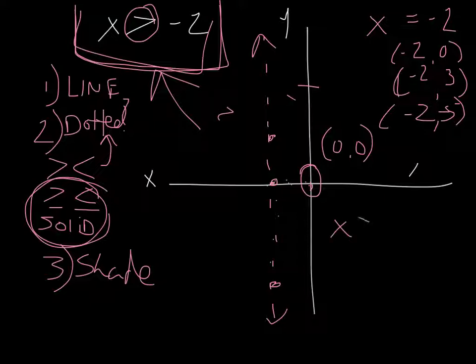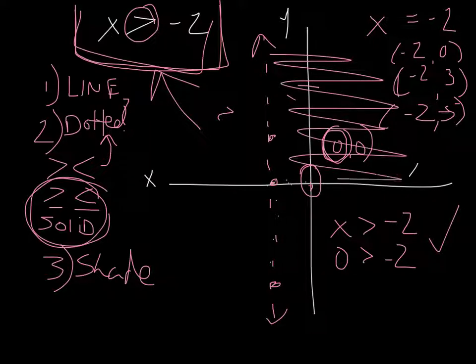So let's plug it in. x is greater than negative 2. Our x in this equation is 0. Is 0 greater than negative 2? Yeah, it is. Because 0 is larger than a negative, which would be less than 0. So since this works, we shade the side that includes the origin.